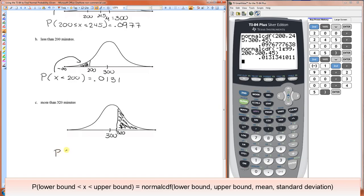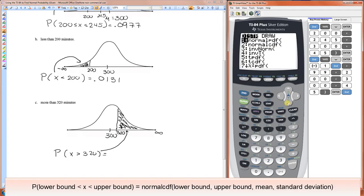What we're looking for is the probability that X is greater than 320, and that's going to be represented by this area. So just as we had to use negative infinity here, this is going to be positive infinity. So we use the normal CDF function. The lower bound is 320.